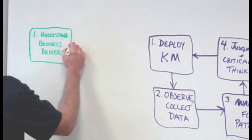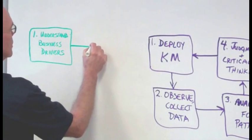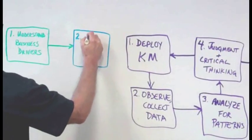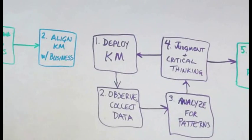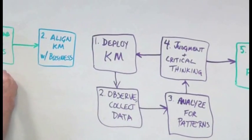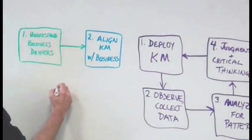Then, step two might look more like, let's align our KM strategy and any associated investments with the business strategy. Now, KM will enable where the business wants to go and add the kind of specific value the business is looking for.